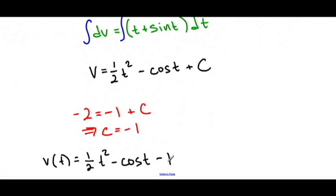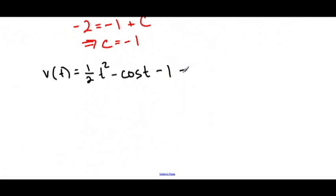So at this point, I can just set my velocity function equal to zero and use a graphing calculator to find the zeros of this particular function.